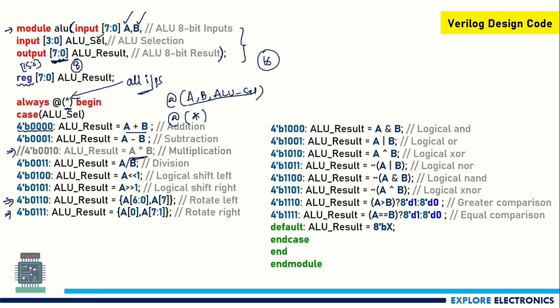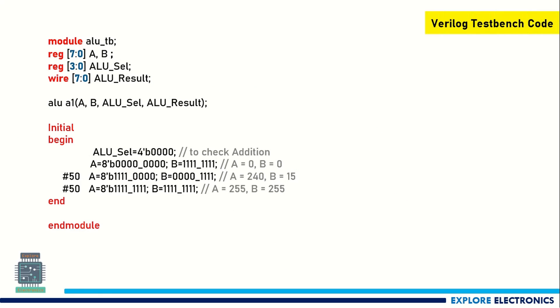Now I'll write the test bench. In the test bench, inputs are represented as registers and the output becomes a wire. I instantiate the design block with all the inputs and outputs. In the initial begin block, I write opcode 4'b0000 to check addition, and I take three sets of different values for A and B to verify the ALU performs addition correctly.